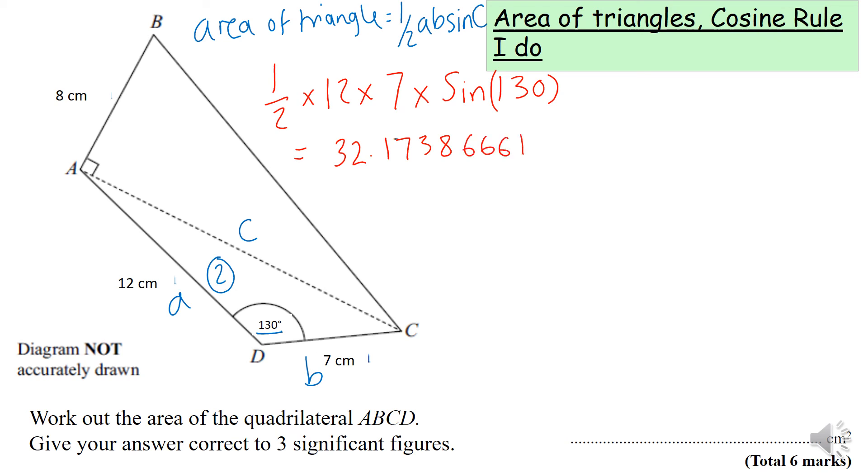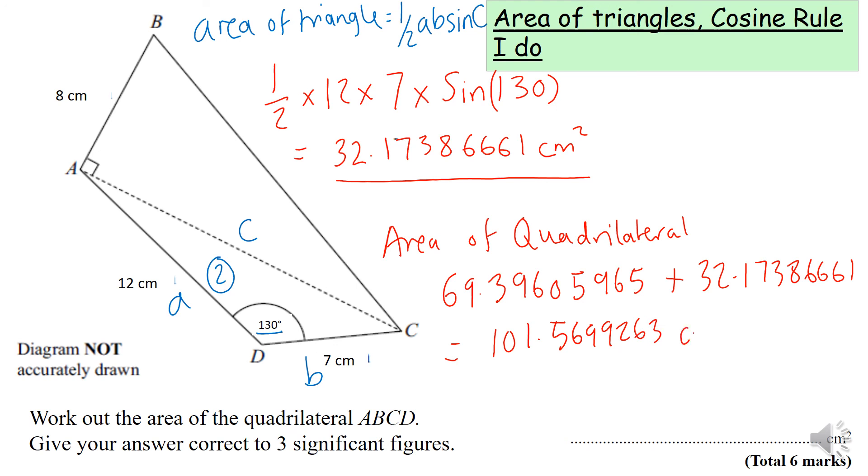We have the area of triangle 2 and the area of triangle 1, so the total area of the quadrilateral will be area triangle 1 plus area triangle 2. That's 69.3960559965 plus 32.17386661, which gives me a total of 101.5699263 centimeters squared.